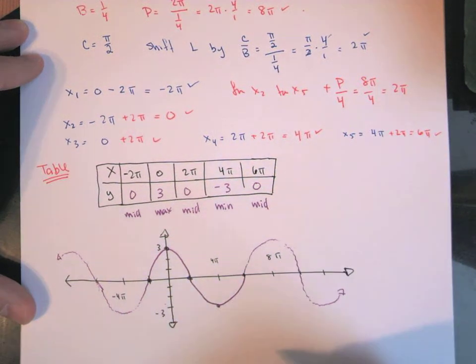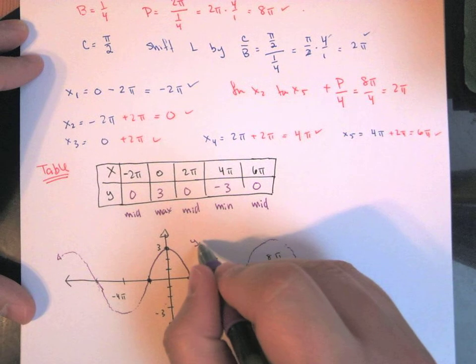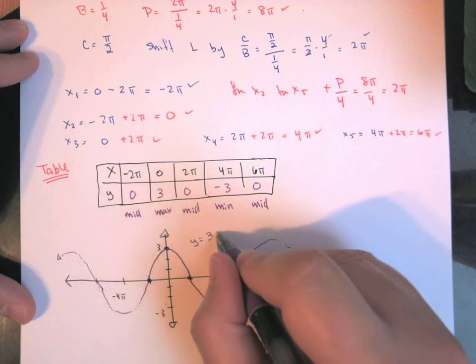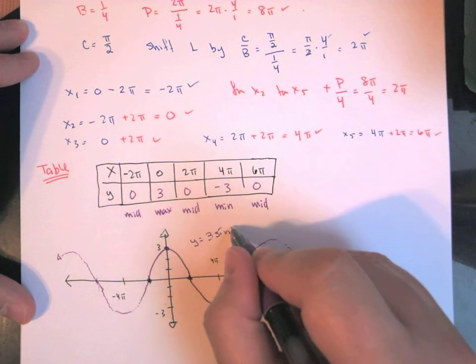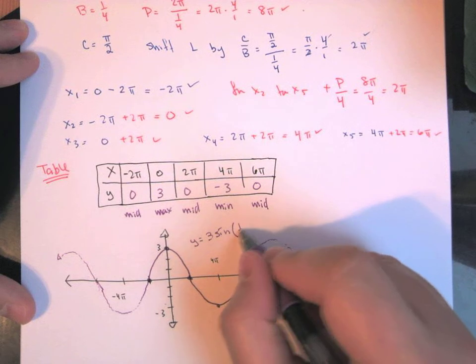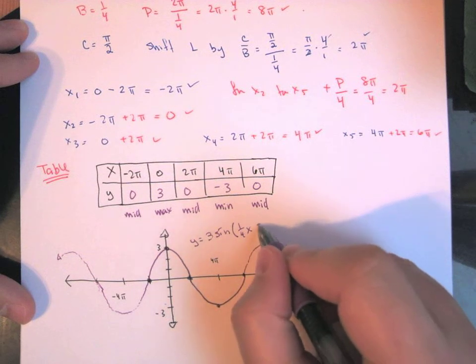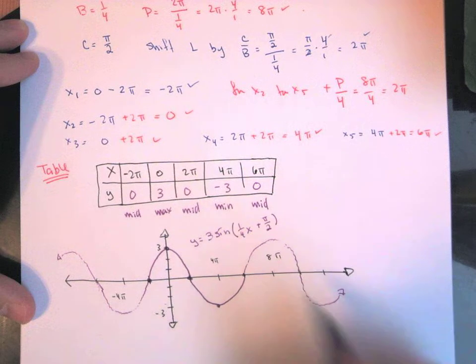So this is going to be y is positive 3 times the sine of what was in the middle here, one quarter x, and this is plus π over 2.